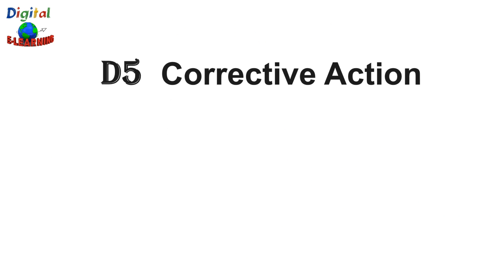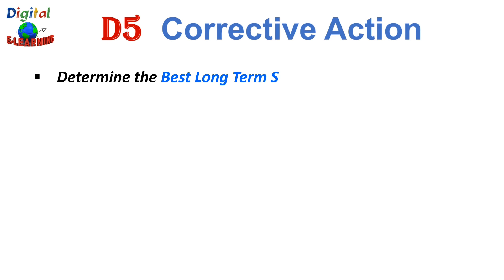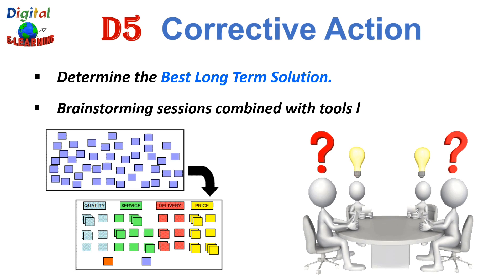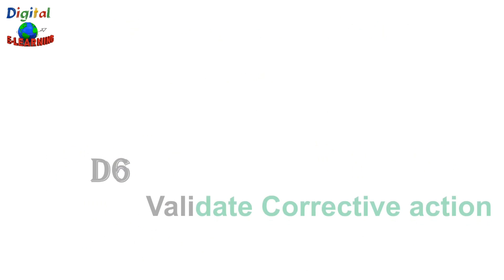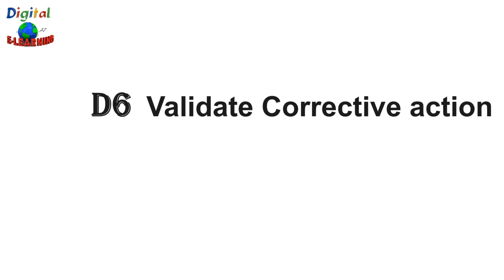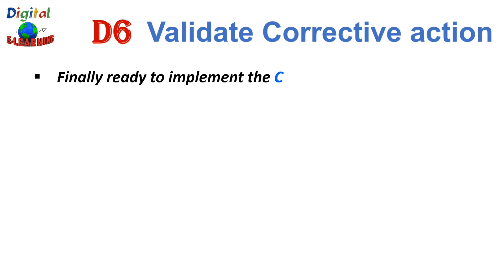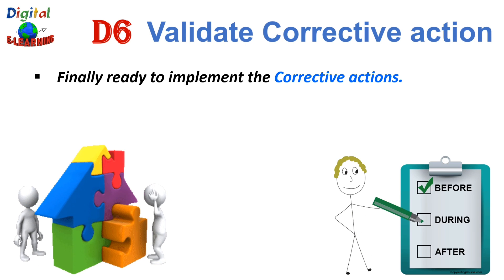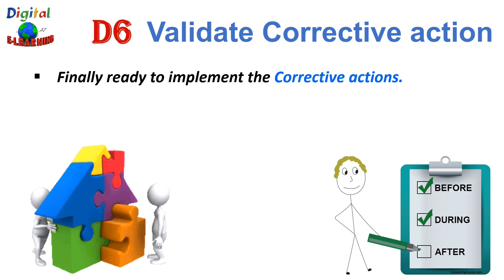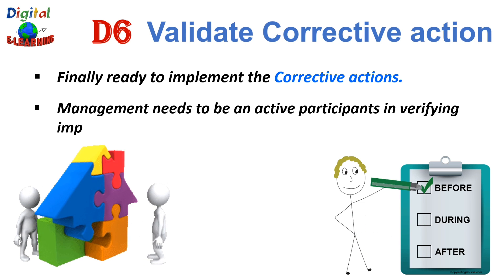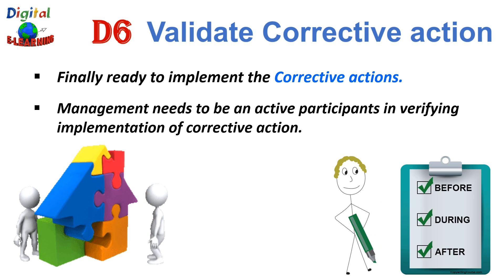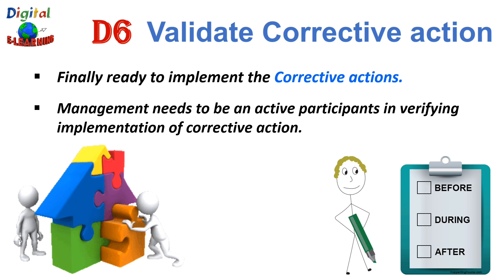The sixth D is D5 — Corrective Action. After your team has determined the root cause, you are in a position to identify the best long-term solution. Brainstorming sessions combined with tools like the affinity diagram can help organize ideas based on their relationships and determine the most effective solution. The seventh D is D6 — Validate the Corrective Action. This is when you are finally ready to implement the corrective action, highlighting the key role of planning in D0. Management needs to be an active participant in verifying implementation, visibly present on the shop floor and in regular reviews of key performance indicators to measure effectiveness.